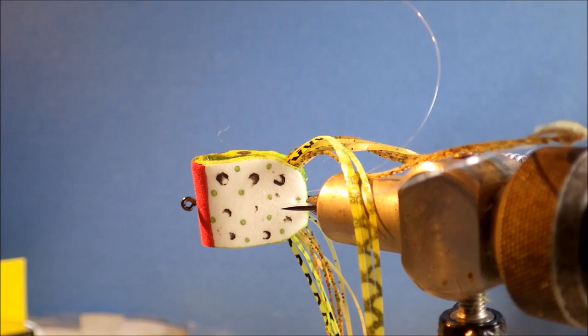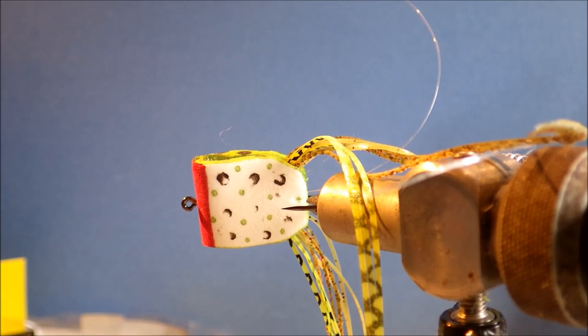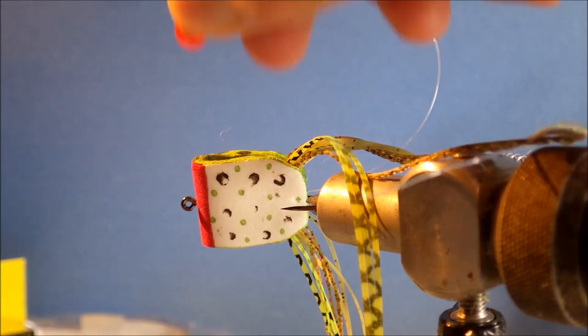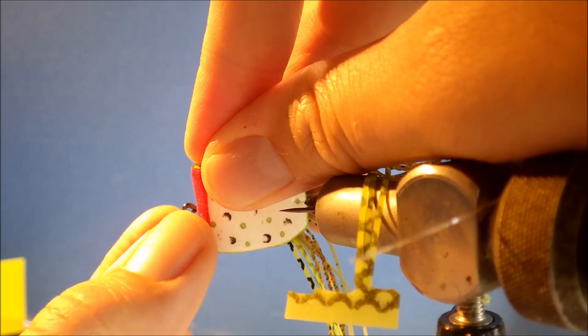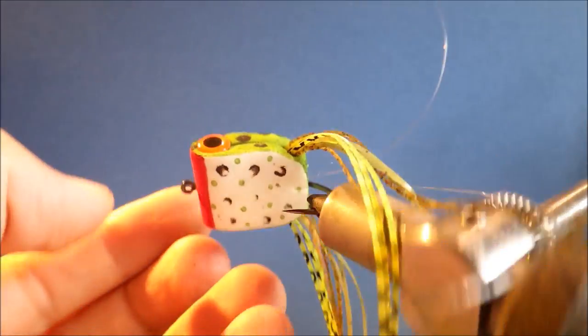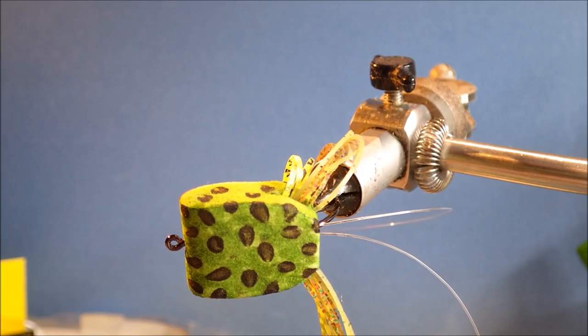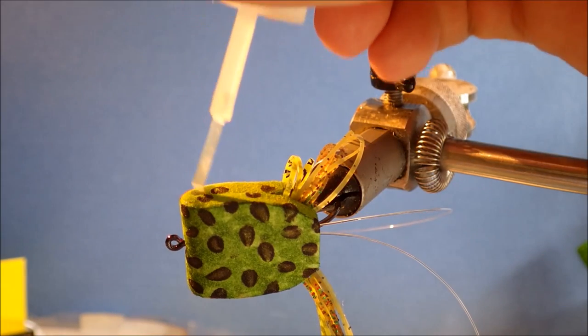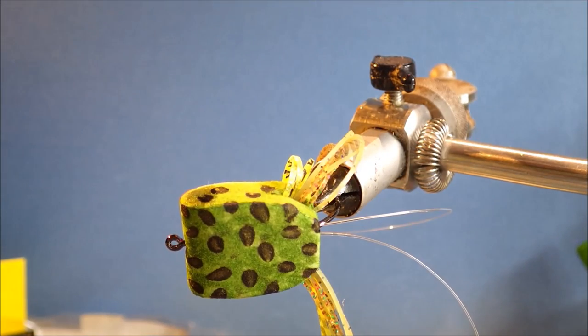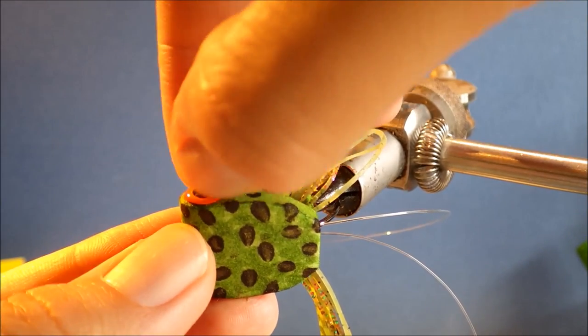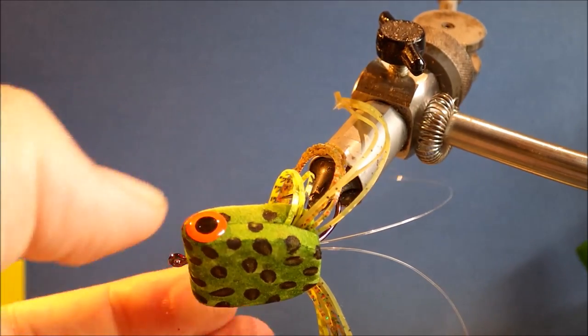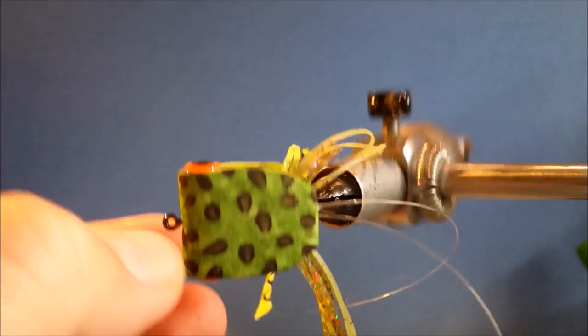So right at the front of the crease, a bit more super glue. Get that eye well stuck. Same on the other side. Plenty of glue. A nice 8mm eye. Press it right and make sure it's got a good grip on the foam.